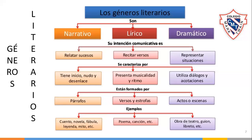Lo lírico, que es la poesía, presenta la musicalidad y el ritmo. En lo dramático se utilizan los gestos para poder expresar esos diálogos o acotaciones. Están formados por párrafos; lo lírico por versos y estrofas. Lo narrativo incluye la epopeya, leyenda, fábula, cuento, novela corta, novela — todo este tipo de narraciones que da un entendimiento sobre el tipo de género.